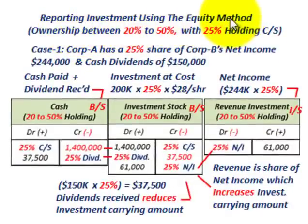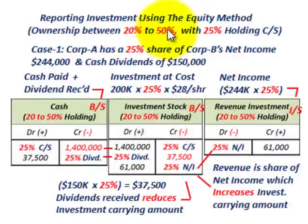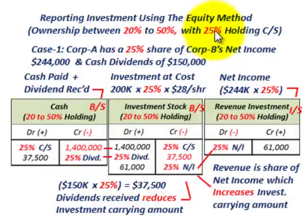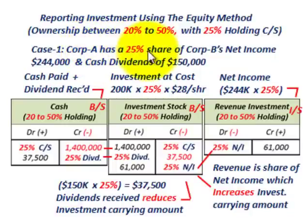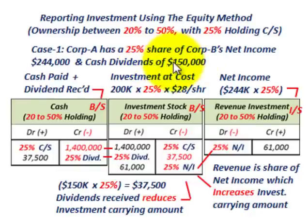For reporting an investment using the equity method — that's where you have an ownership interest between 20 to 50 percent in the other company — we're looking at a 25 percent holding of the common stock of Corporation B. You have to set up an investment stock account on your balance sheet. It's an equity account used when you have a 20 to 50 percent holding.